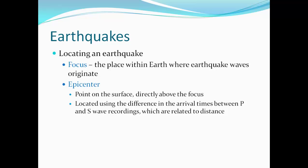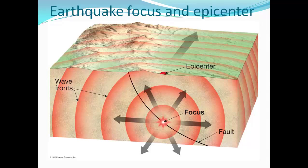How do you locate an earthquake? The focus is the place within the Earth where the earthquake waves originate. The epicenter is the point on the surface of the Earth directly above that focus. Earthquakes are located using the difference in arrival times between P waves and S waves, which relate to the distance from the seismograph to the epicenter. Here's the fault where energy was released — that's the focus — and directly above it on the surface is the epicenter.